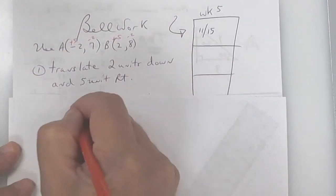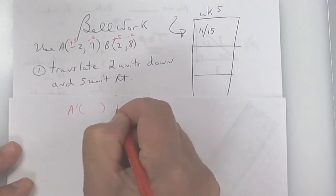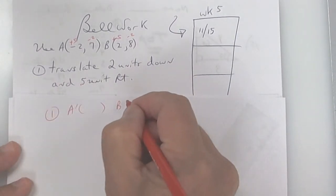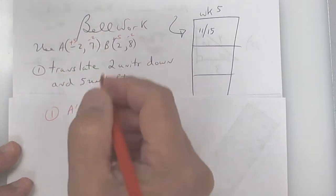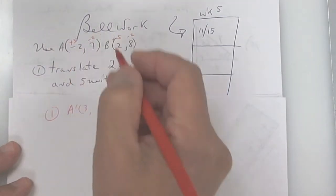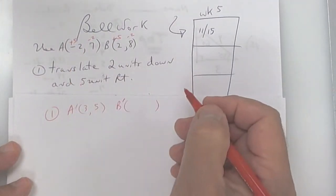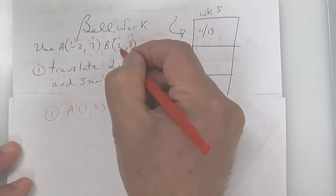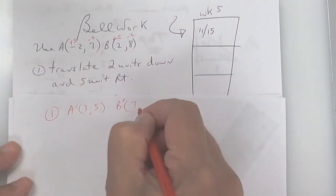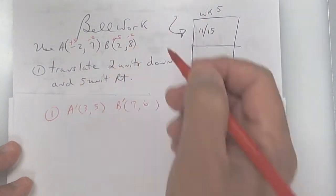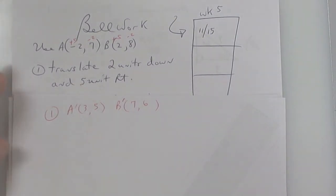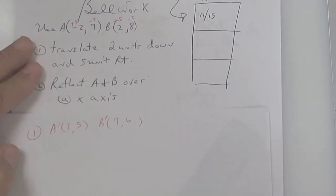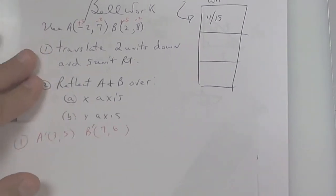You're going to end up with A prime and B prime for number one. Five minus two is three, seven minus two is five — that's the new point. Then you get seven and six, eight minus two. That's all you do to slide it, which is called a translation.